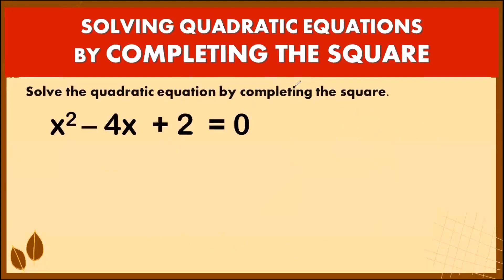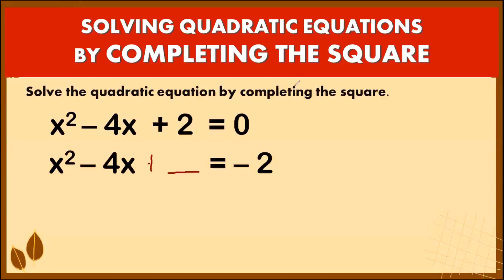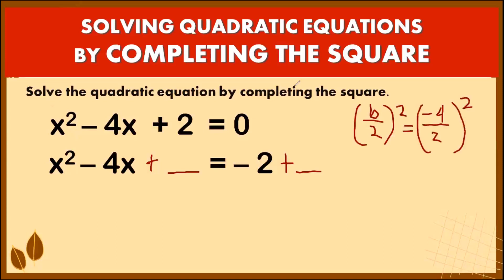For our second example, we have x² − 4x + 2 = 0. Move the 2 to the right side, giving negative 2. Make a space on the left side for the perfect square term, and add the same value to the right side. Get half of b: b is negative 4 divided by 2 is negative 2, and negative 2 squared equals 4. So we add positive 4 on the left side and positive 4 on the right side.